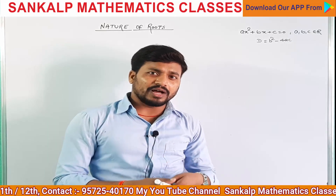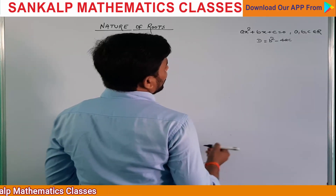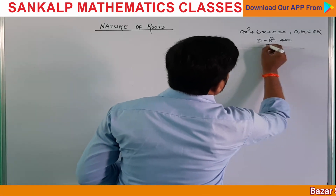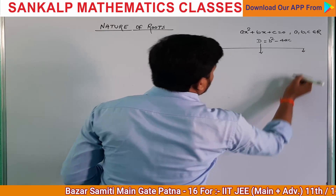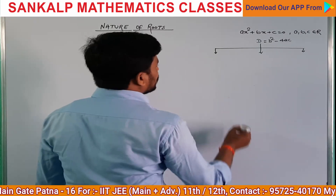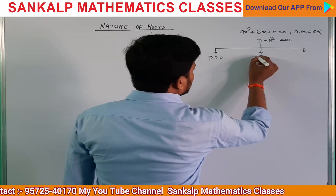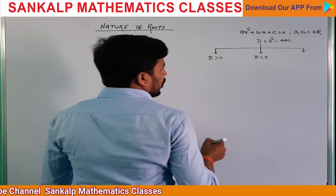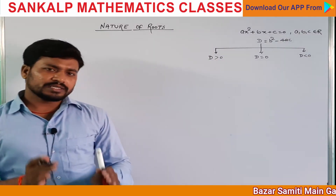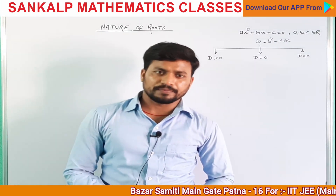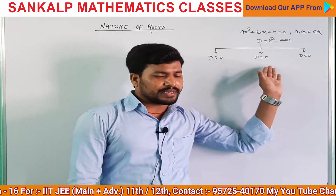अब D पर condition क्या हो सकता है — यहाँ पर मैं आपको 3 conditions दिखाऊंगा। पहली: D की value positive हो सकती है। दूसरी: D की value 0 हो सकती है। और तीसरी: D की value less than 0 हो सकती है। Discriminant की value तीन तरह के ही होंगे — एक positive, दूसरी negative, और तीसरी 0 के equal।